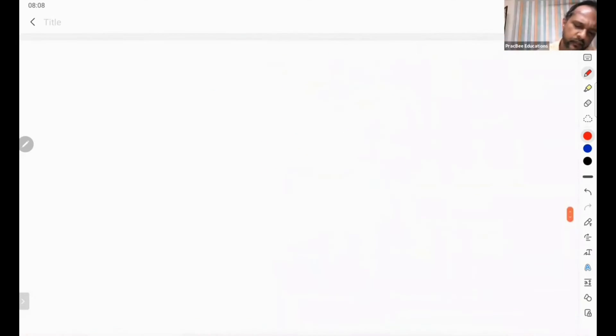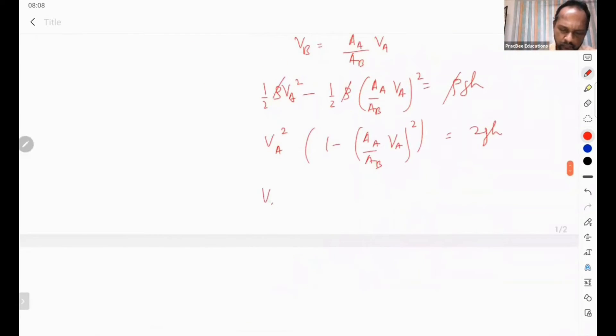So I can write here that the velocity v_a is 2gh / [1 - (A_a/A_b)²], under the square root.